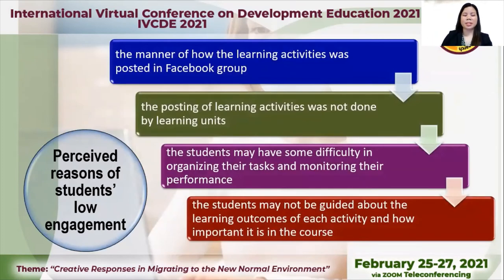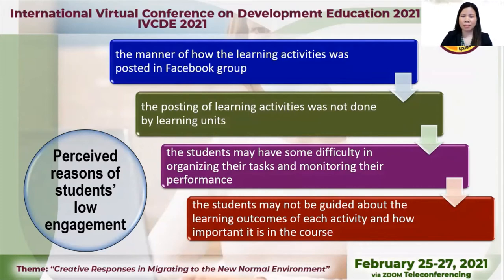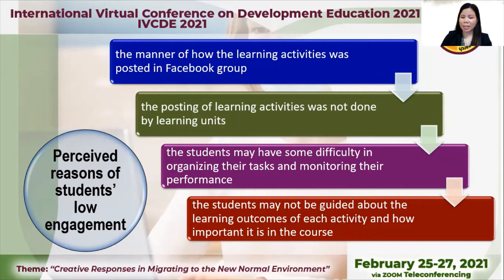These are the perceived reasons of students' low engagement towards learning activities utilizing the Facebook group. It is the manner of how the learning activities were posted — the posting was not done by learning units; it was not organized. The students may have had some difficulty organizing their tasks and monitoring their performance because the manner it was posted was not orderly. The students may not have been guided about the learning outcomes of each activity and how important it is in the course — that may be the reason why they didn't take it seriously.